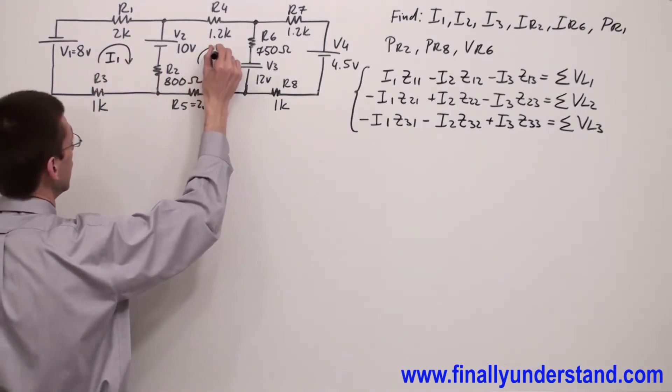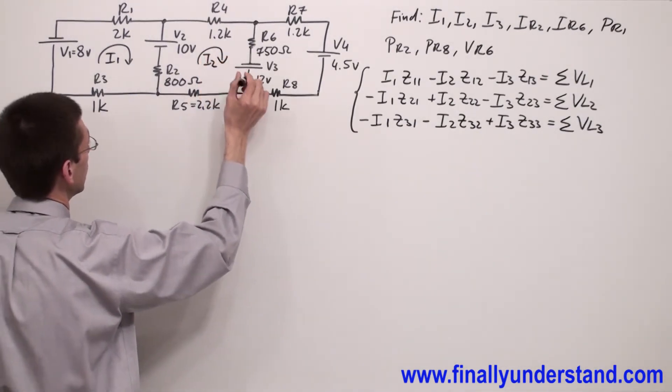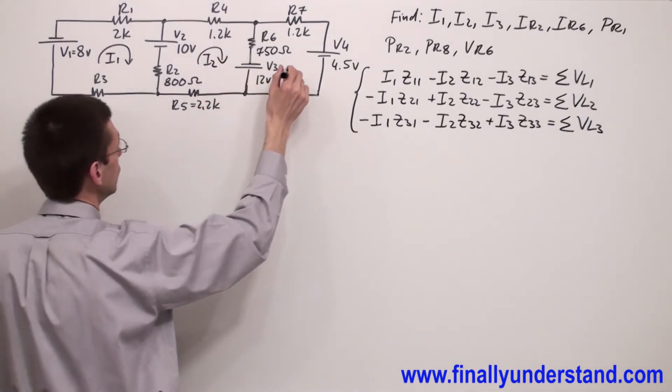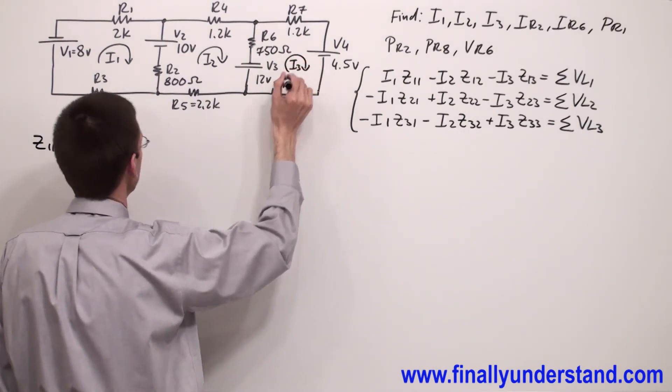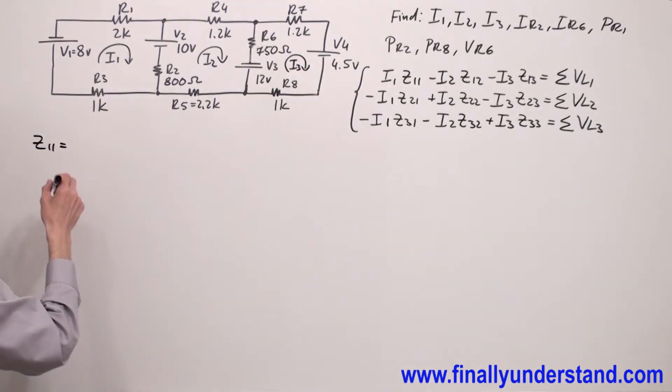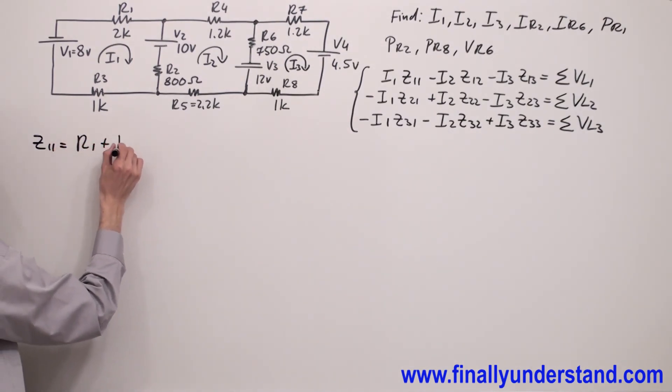This is my loop 2 with loop current I2. And this is my loop 3 with loop current I3. Z11 is R1 plus R2.